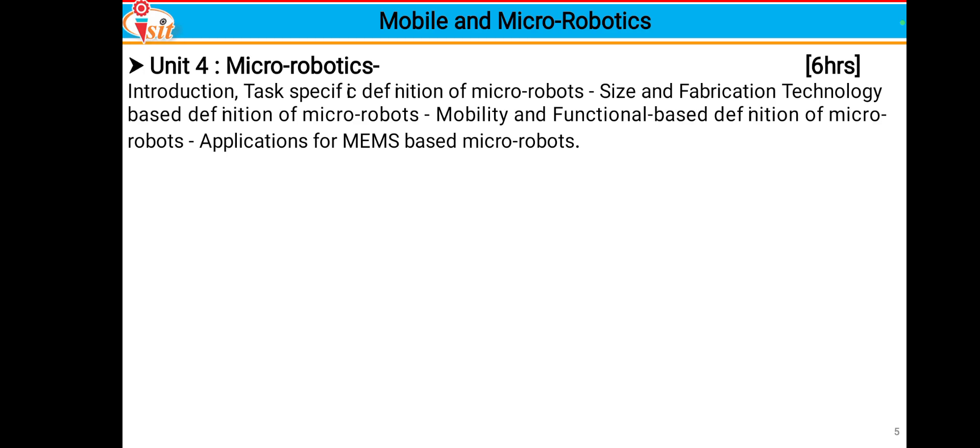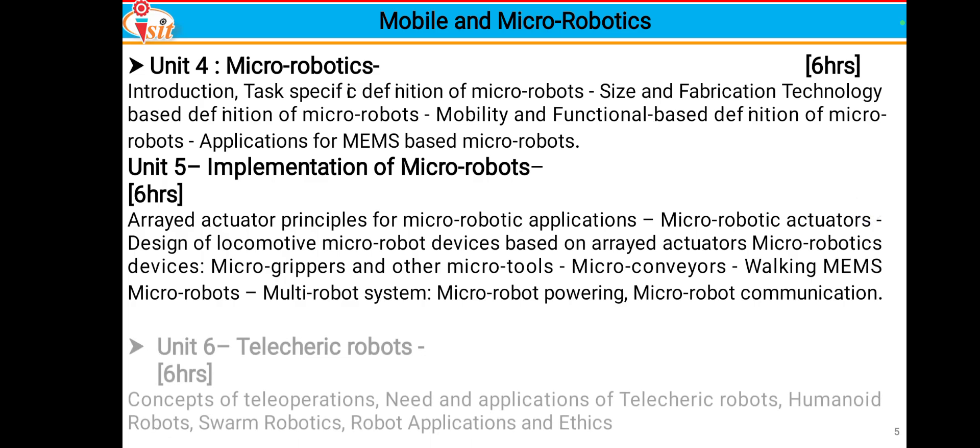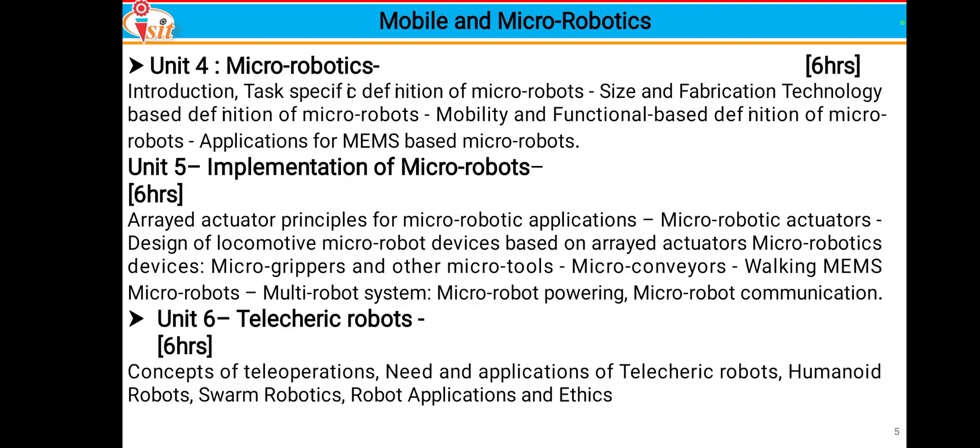Unit 4 also covers MEMS-based micro robots — that is, micro electro-mechanical system based micro robots. Unit 5 covers implementation of micro robots: arrayed actuator principles for micro robotic applications, micro robotic actuator design, locomotive micro robot devices based on arrayed actuators, micro grippers, micro tools, micro conveyors, walking MEMS, multi-robot systems, micro robot powering, and micro robot communication.